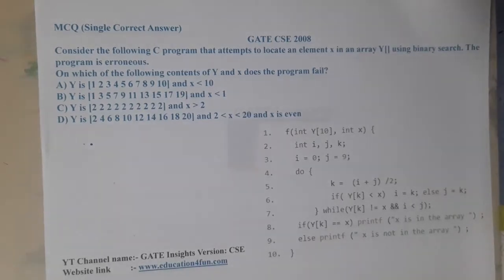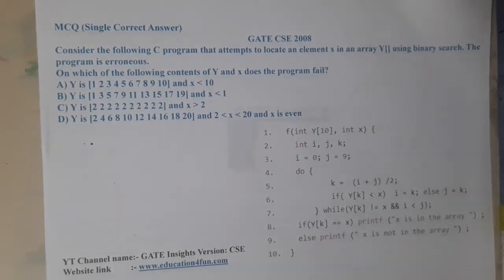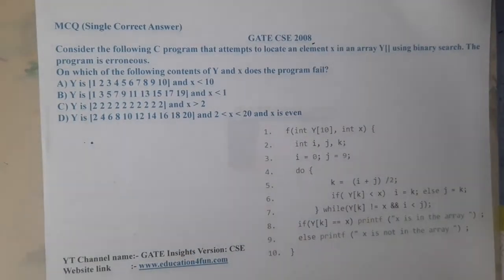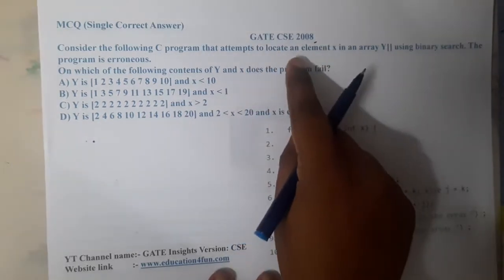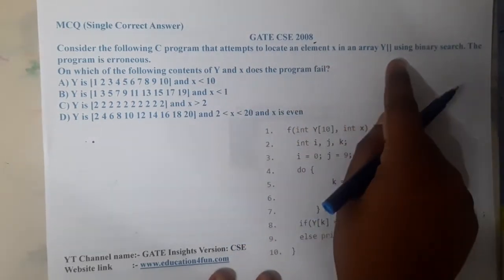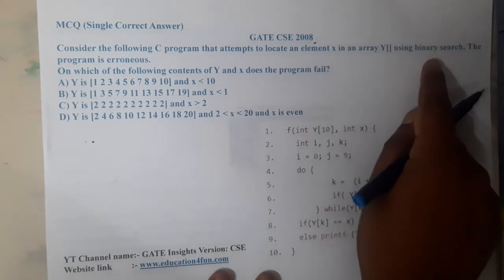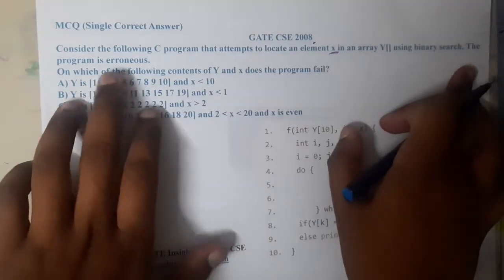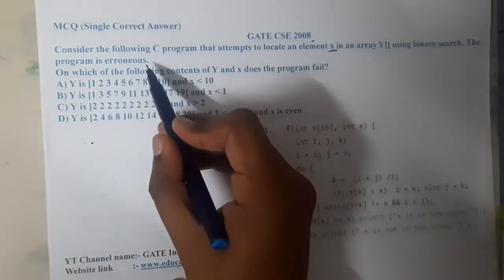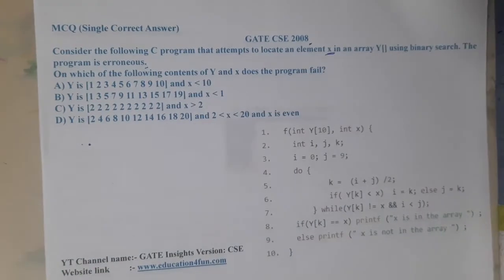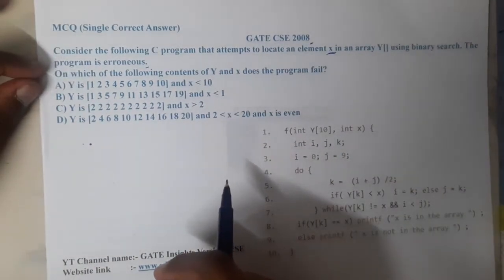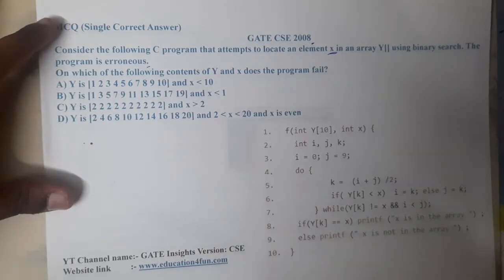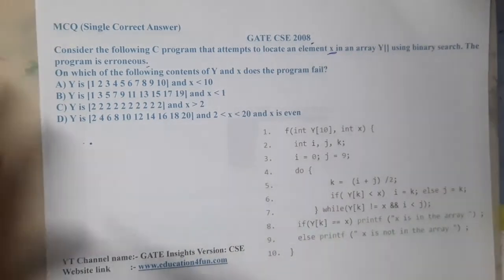Hello guys, we are back with our next lecture. This question belongs to GATE CSE 2008. The question asks us to consider a C code that attempts to locate an element x in an array y using binary search. The program is erroneous — there is some bug in the code — and they are asking on which of the following conditions the code will fail.